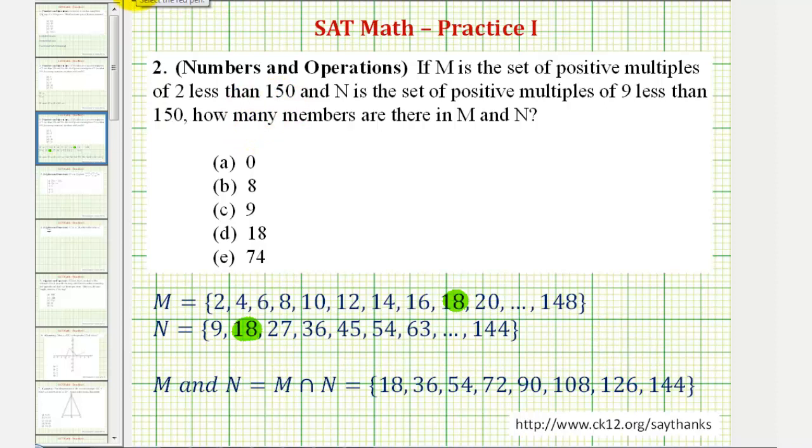So if we list them all like this, which is a bit time consuming, we would just count these members or these numbers, one through eight. So our answer is B, eight.